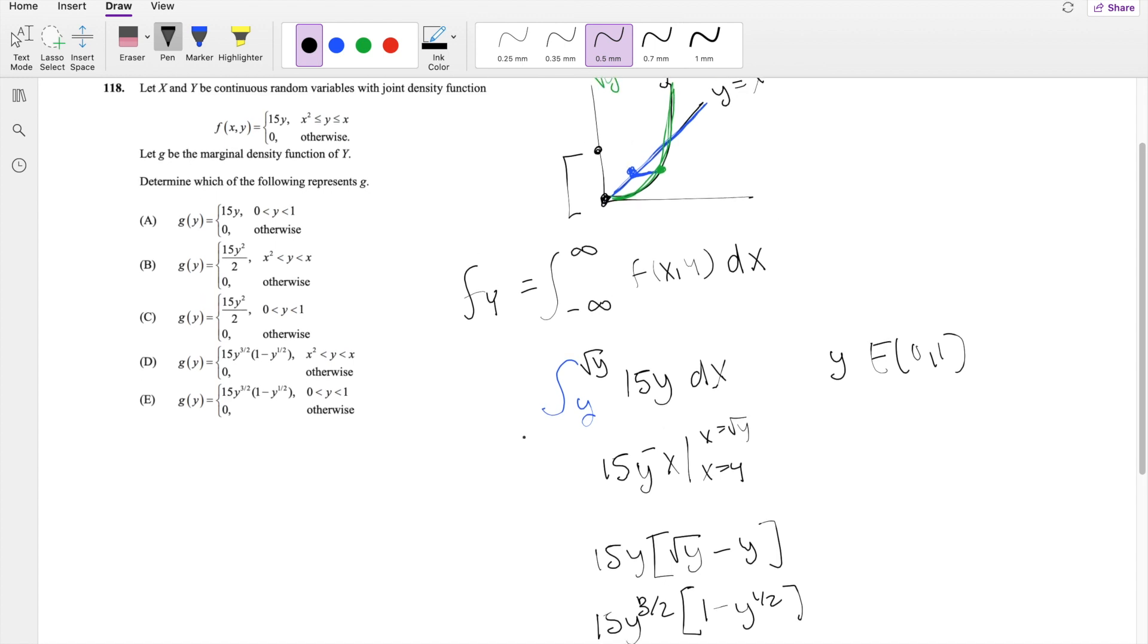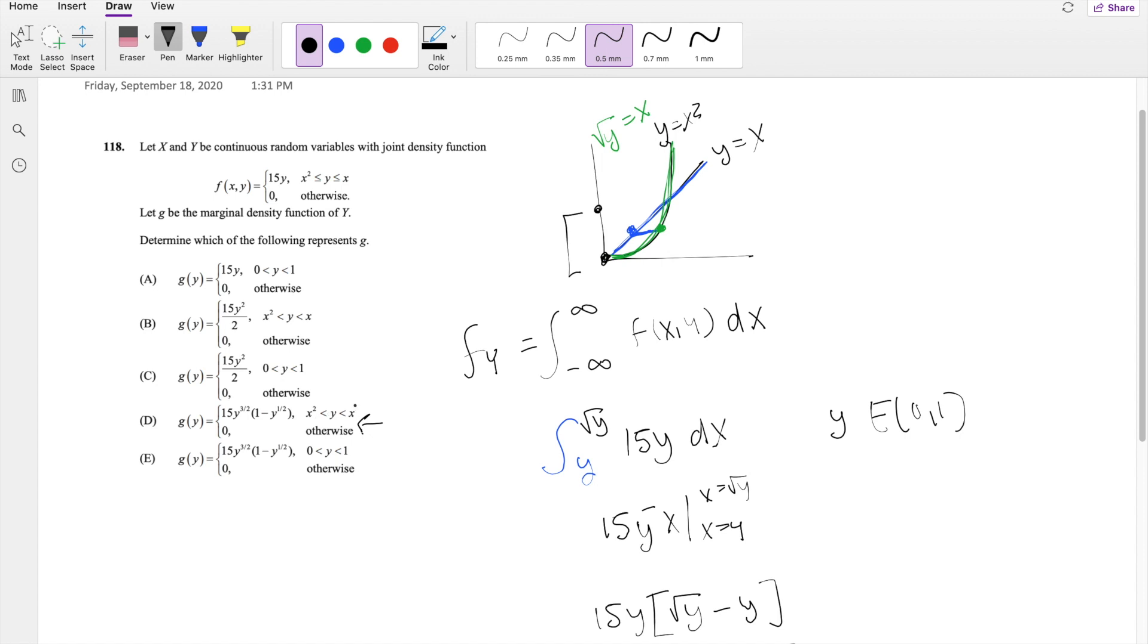And you might be wondering, why is it not this one? Well, we already integrated in terms of dx. So we already took care of the x squared and root x. Let's say you're finding expectation of x first and you're integrating in terms of dx first, then you would indeed say this is y to square root of y. But because we already took care of this, we just talk about what y equals. And y is going from 0 to 1.